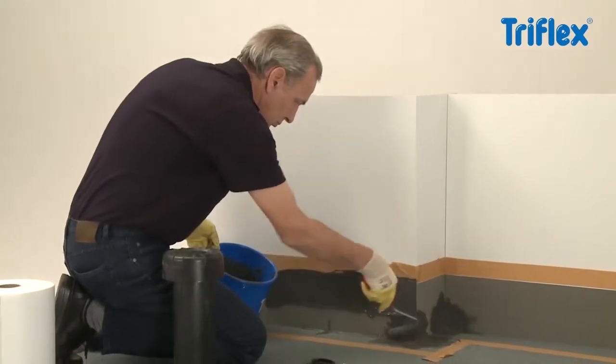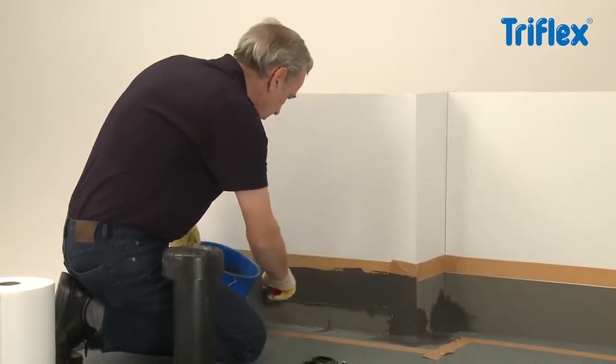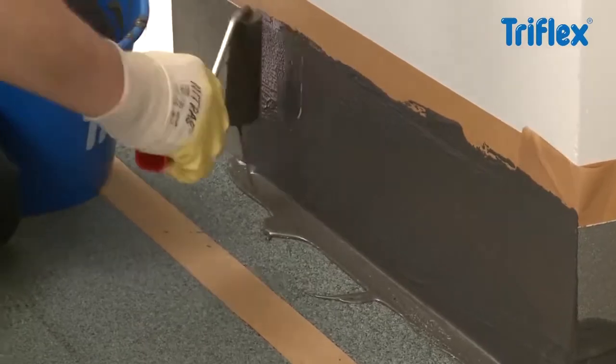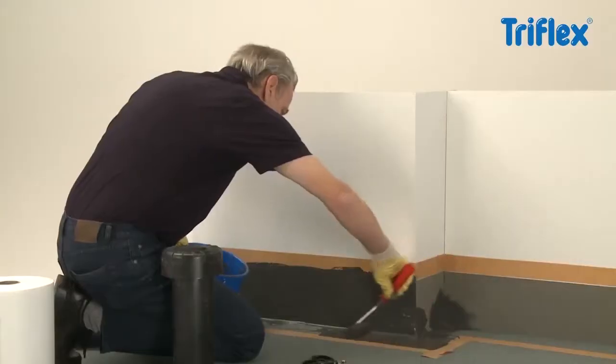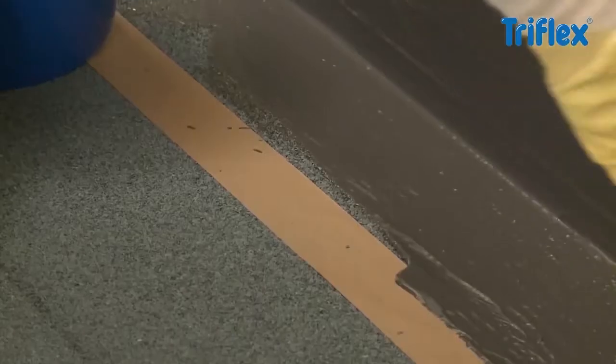Finally, apply the waterproofing resin thickly using a radiator roller following the line of the edge. At least 2 kg are applied per square meter.